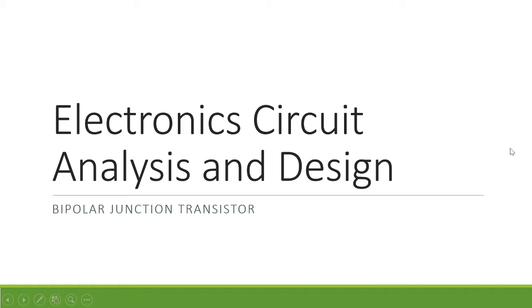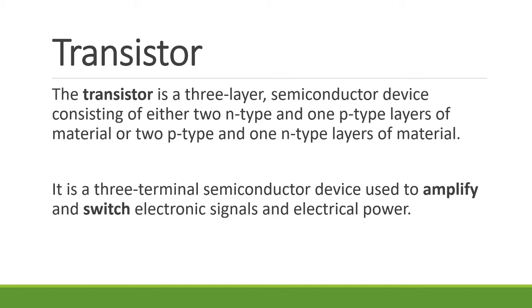Hello class. So this is our review with bipolar junction transistors. Let us first define what a transistor is. A transistor is a three-layer semiconductor device consisting of either two N-type and one P-type materials or layers of material.